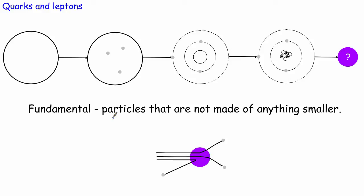Back in the 1960s, scientists took some protons and neutrons and fired really high-speed, high-energy electrons at them. What they found is that some of the electrons were deflected at really big angles — almost bounced back. If protons and neutrons were just solid spheres, most electrons should be deflected at small angles, but because some bounced back at large angles it meant they had some sort of internal structure — in other words, they were made of something else.